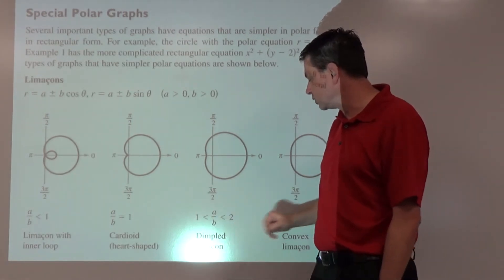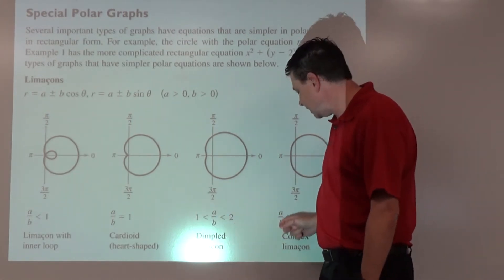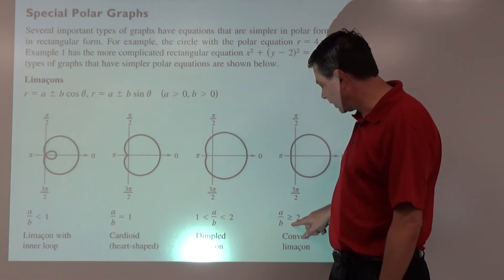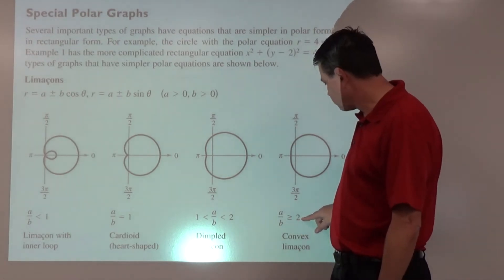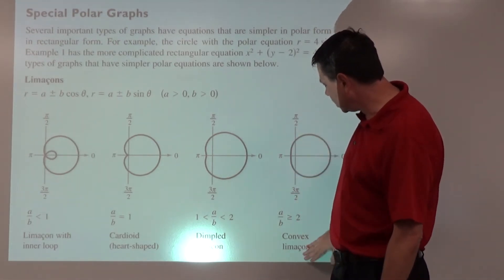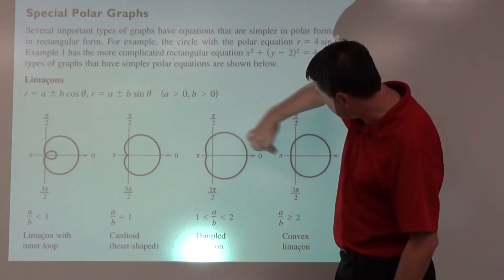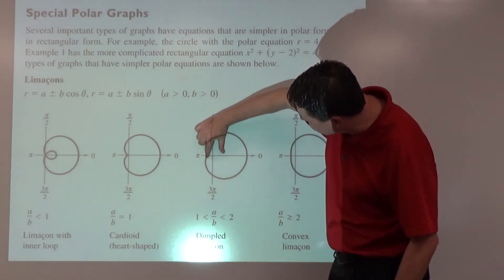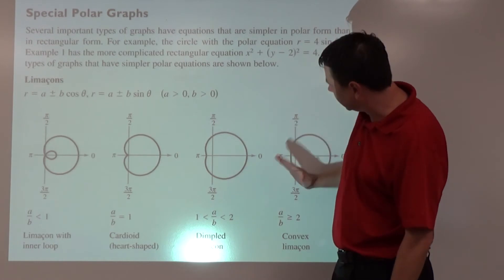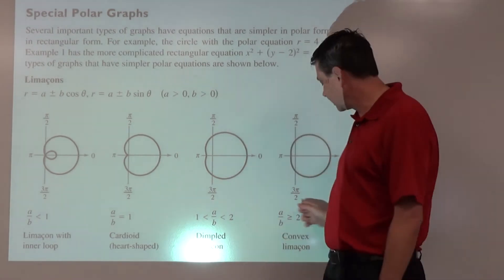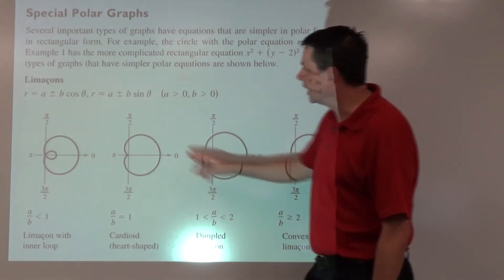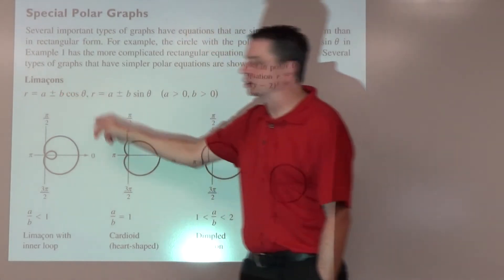If a divided by b is greater than or equal to 2, we get the convex limaçon. It's not quite pushed in where there's a dent. It's just kind of flat in that case. That might be something like 7 plus 3 cosine theta.